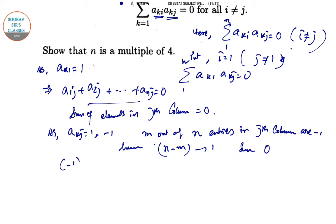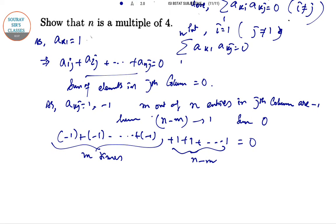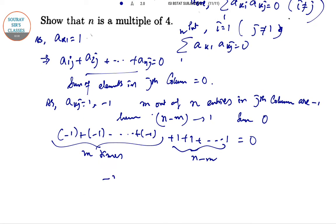So we get it like minus 1 minus 1 dot dot dot minus 1, this is coming m times, plus 1, 1 dot dot dot 1, 0, this is coming n minus m times. So obviously this is negative m plus n minus m equal to 0, so n equal to 2m. That is, n is an even number at least, this we know.